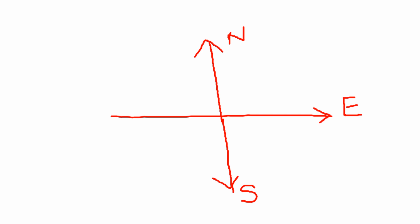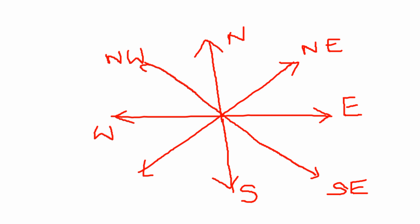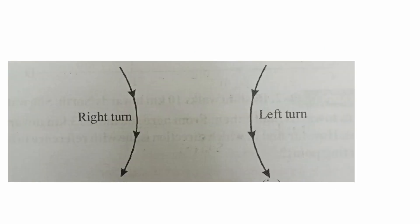In between two main directions we have the cardinal directions. There are four cardinal directions: between north and east is north-east, between north and west is north-west, between south and west is south-west, and between south and east is south-east.